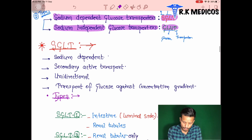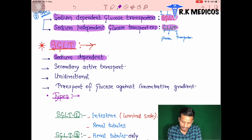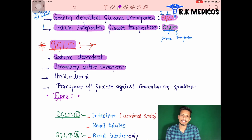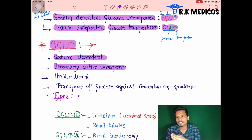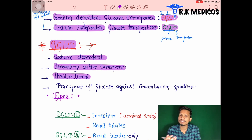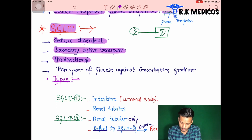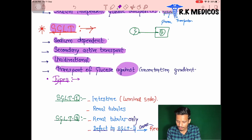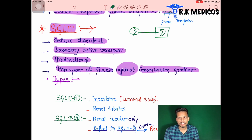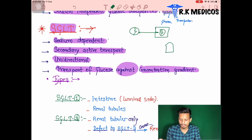Now we start with SGLT — sodium-dependent glucose transporters — in which sodium is required for transport. It depends on secondary active transport, meaning ATP is not directly utilized by the cell; they act indirectly. They transport glucose unidirectionally into the cell, working against the concentration gradient, which is why they are called active transport.